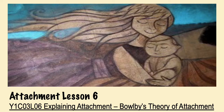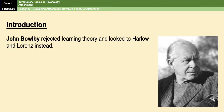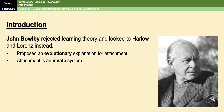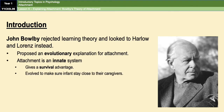John Bowlby rejected the Learning Theory of Attachment because if it were true, infants should readily attach to any adult that regularly feeds them — which we know isn't the case. Instead, Bowlby took inspiration from the work of people like Lorenz and Harlow and suggested an evolutionary theory of attachment — a theory that sees attachment as an innate process that provides a survival advantage. Like imprinting, attachment evolved because it ensures infants stay close to their caregivers, protecting them from danger, whether that was predators a hundred thousand years ago or traffic and electricity today.